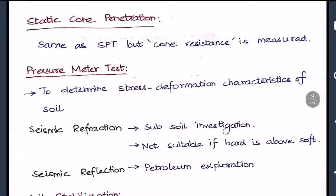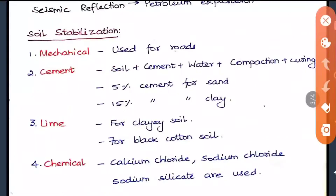Soil stabilization can be done by various methods. The first is the mechanical method — no chemicals are needed; mechanical forces are applied, and this is extensively used for roads. The second is the cement stabilization method: soil plus cement plus water, followed by compaction and curing. 5% cement is added for sandy soil and 15% cement is added for clay.